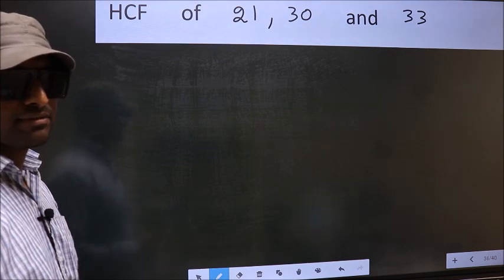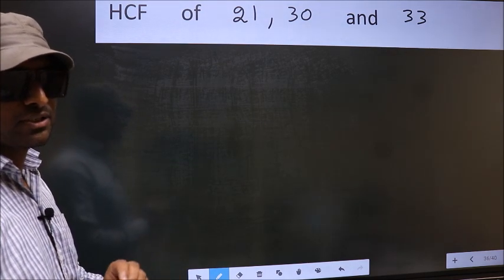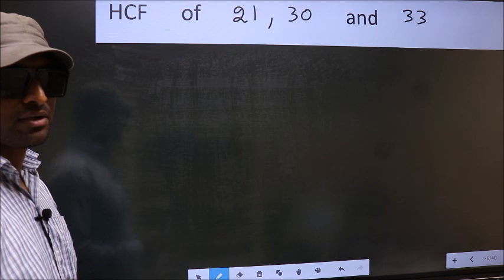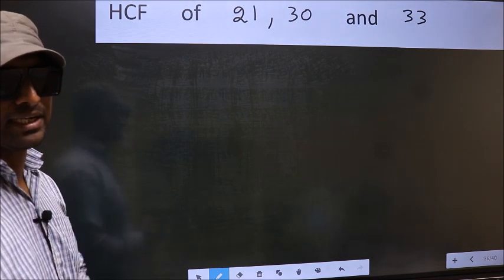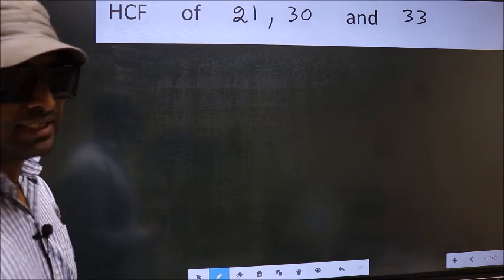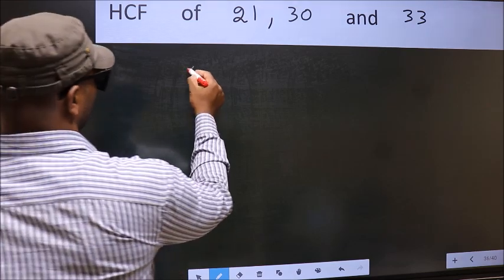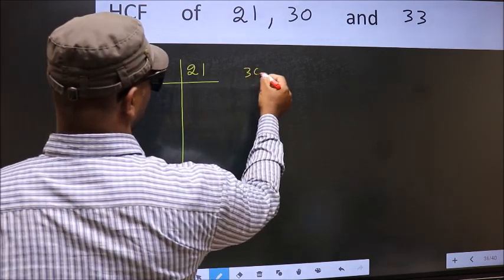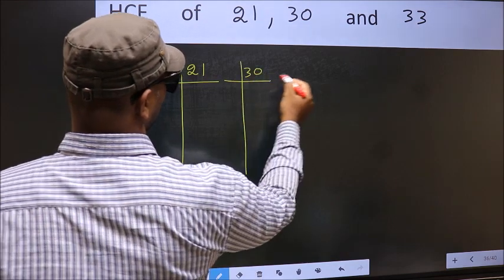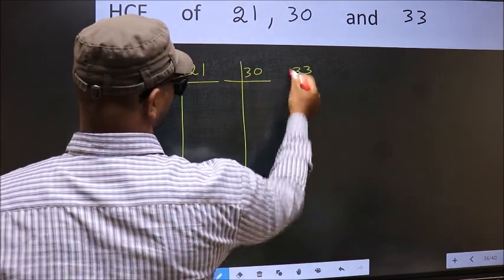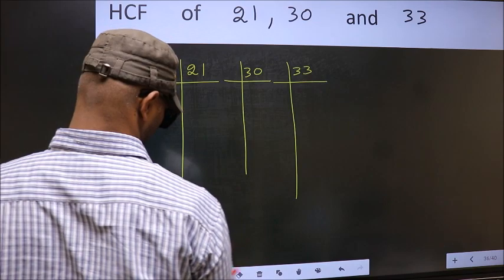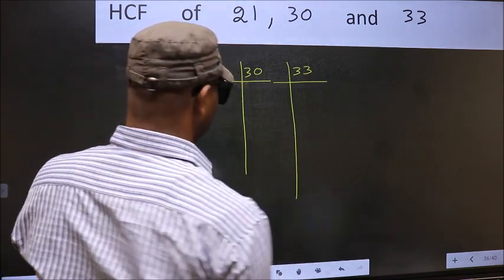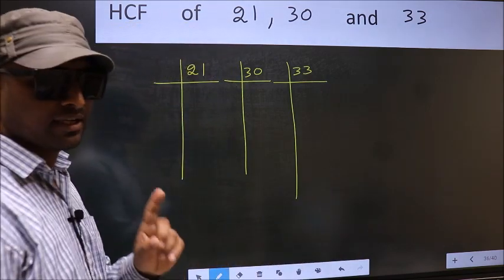To find the HCF, we should do the prime factorization of each number separately: 21, 30, and 33. This is step 1.